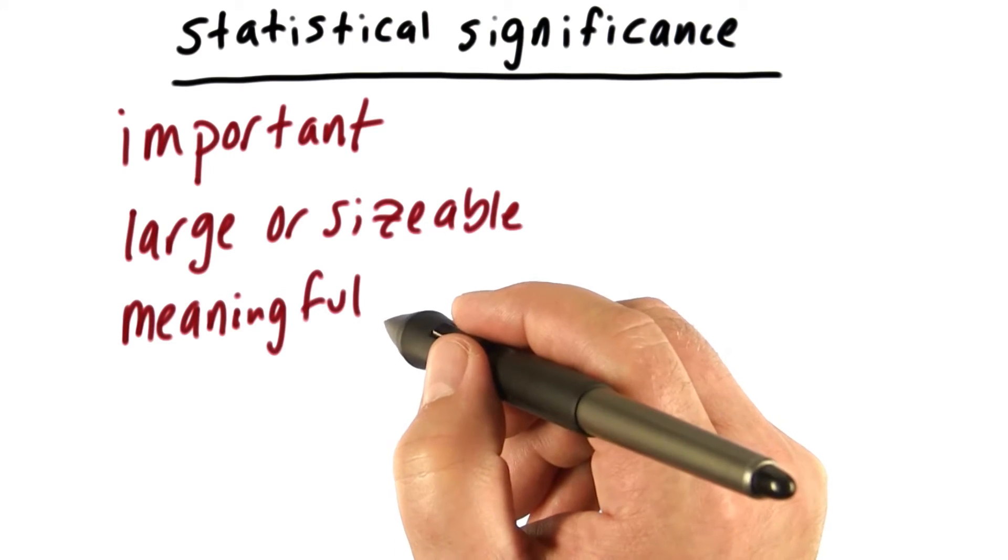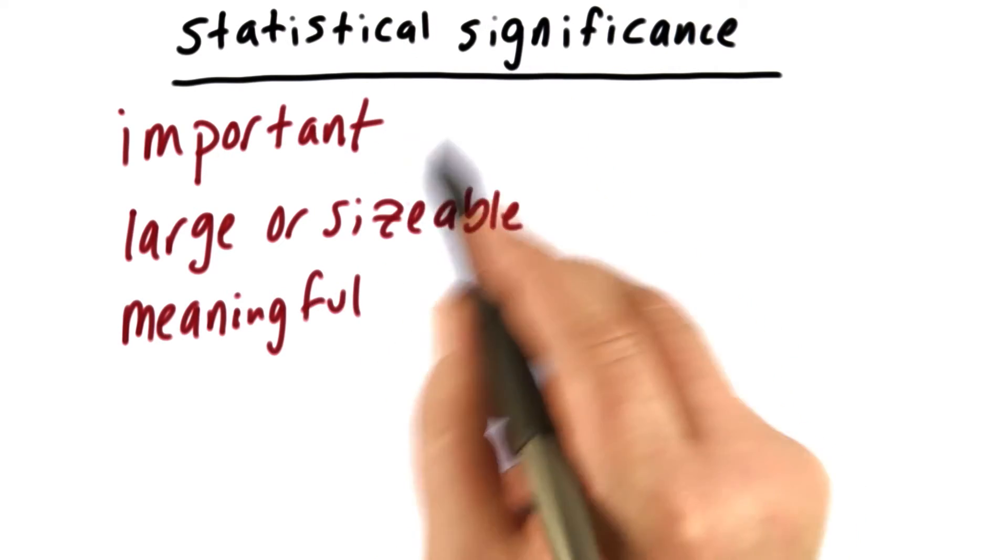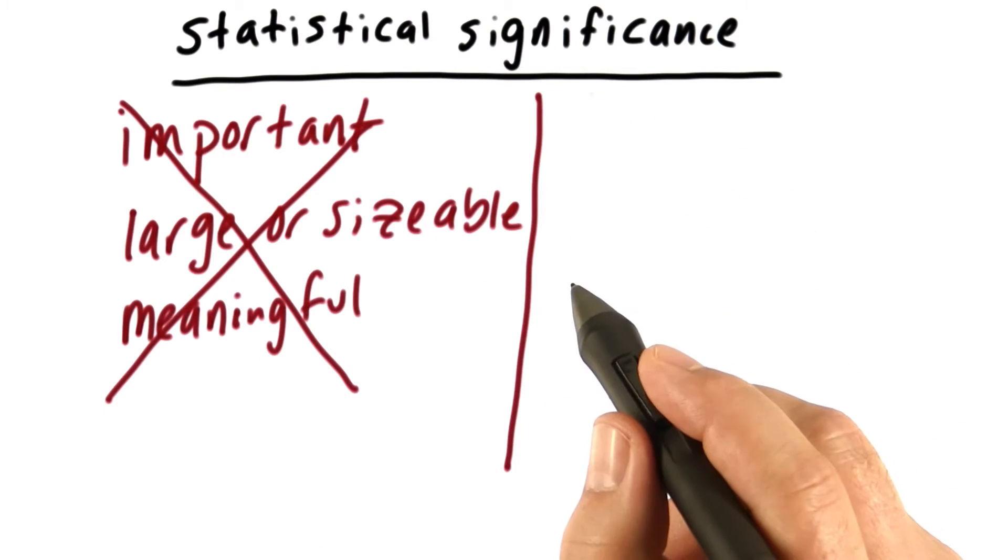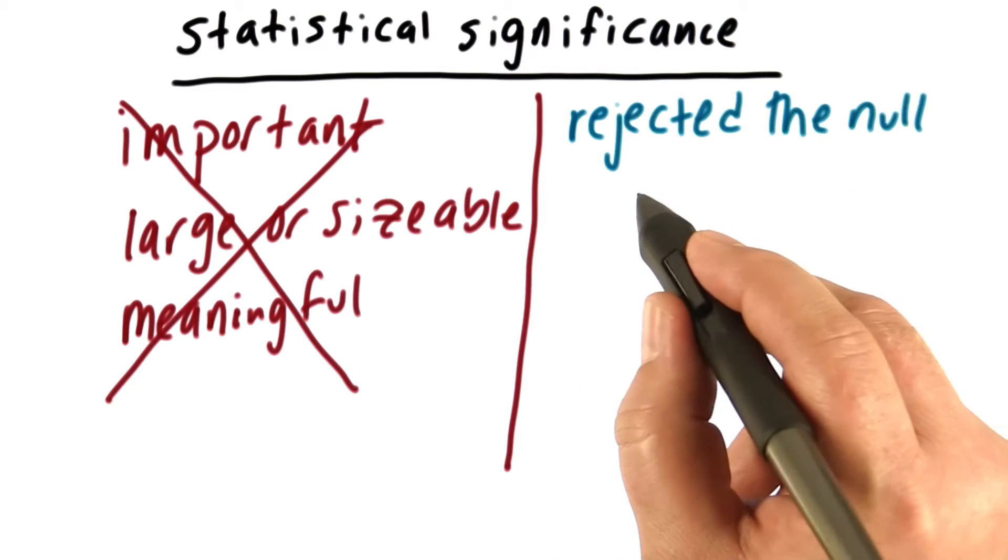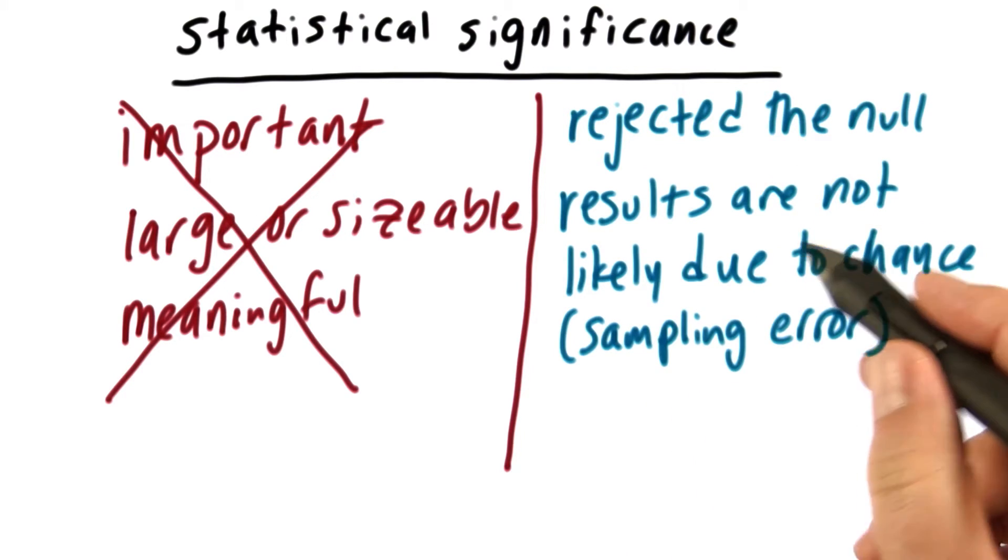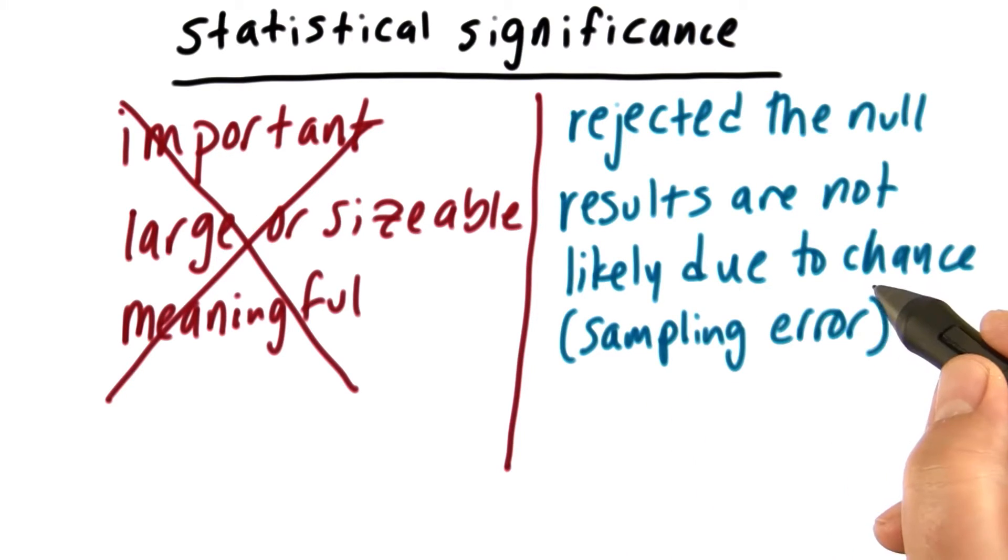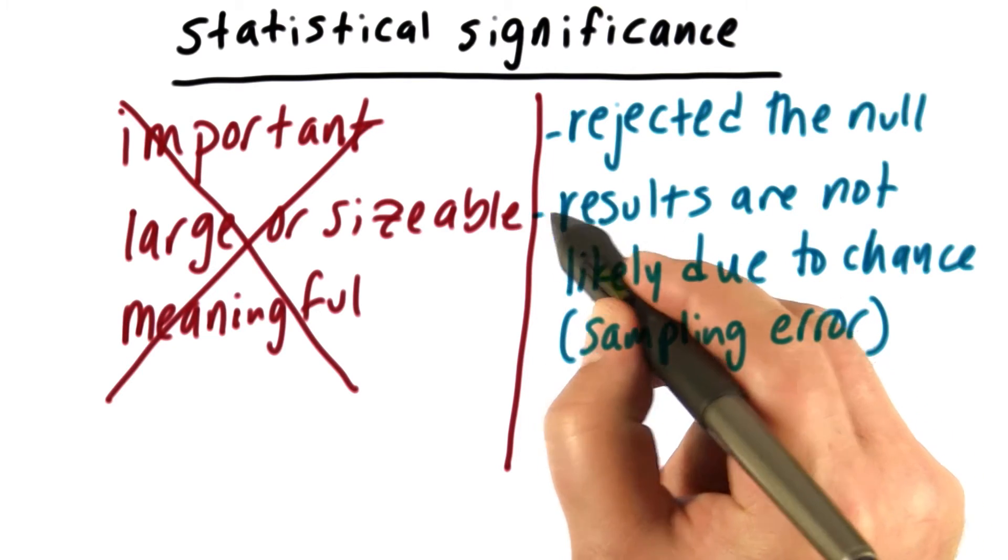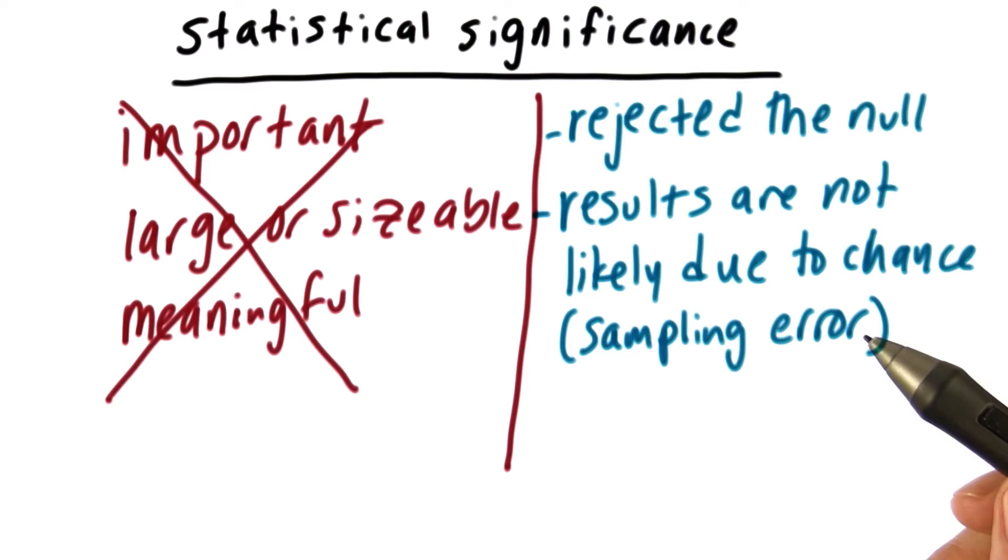In statistics, the phrase statistical significance has none of these meanings. I'm going to write on the other side what significance does mean. Significance does mean that we've rejected the null hypothesis. Significance also means that our results are not likely due to chance or sampling error. Notice that this and this are just two different ways of saying the same thing.